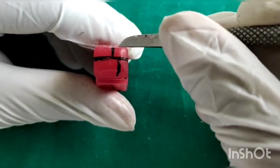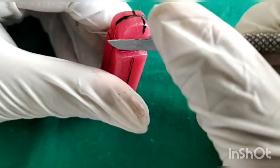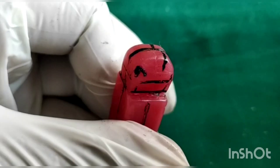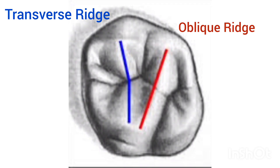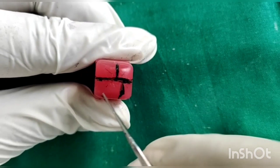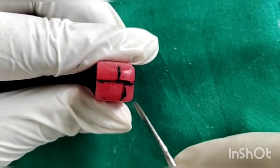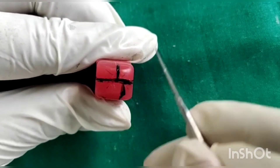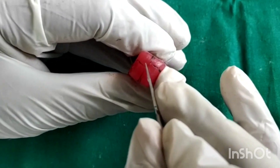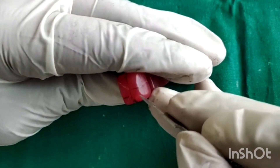Since mesial palatal is the largest cusp, it occupies more place. Below the mesial palatal there will be a cusp of Carabelli. There are two ridges: the transverse ridge, which runs from the mesial buccal cusp ridge to the mesial palatal cusp ridge, and the oblique ridge, which runs from the distal buccal cusp ridge to the mesial palatal triangular ridge. These duly form a V-shape on the occlusal surface.